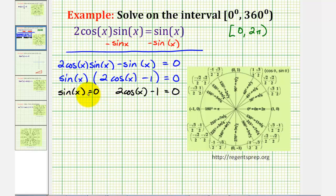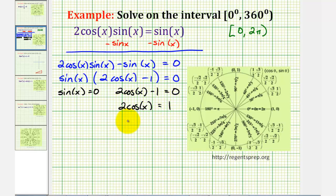Notice how this first equation has already solved for sine x. Let's go ahead and solve this second equation for cosine x. For the first step, we would add one to both sides, which would give us two cosine x equals positive one. And now we'll divide both sides by two, which would give us cosine x equals one-half. So the solutions to the given trig equation occur where sine x equals zero or where cosine x equals one-half.